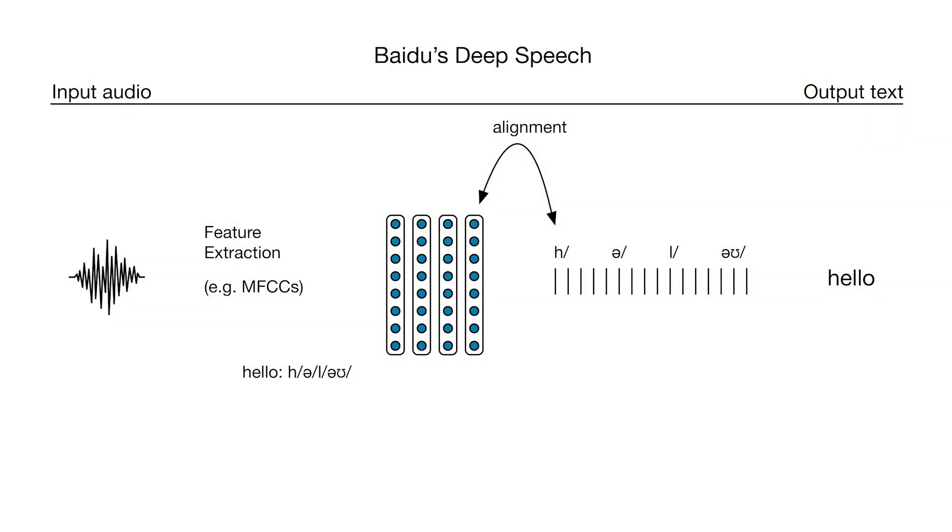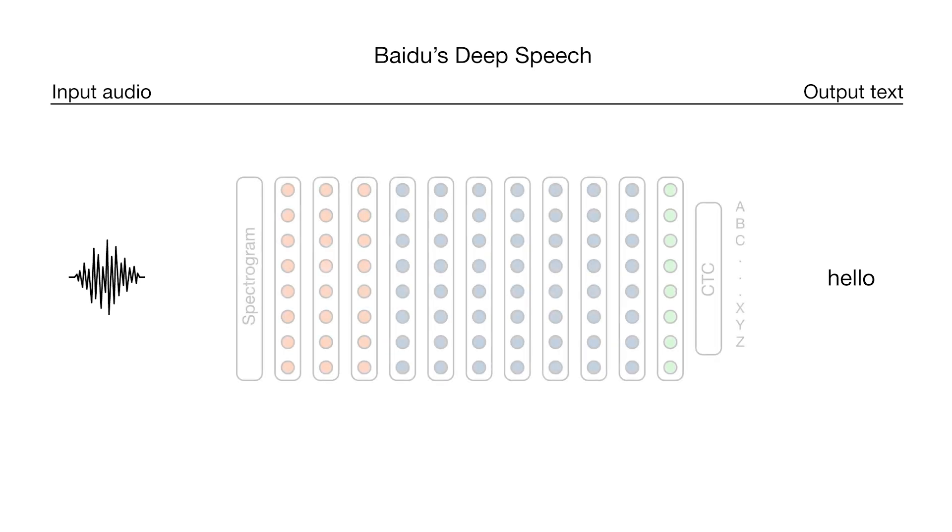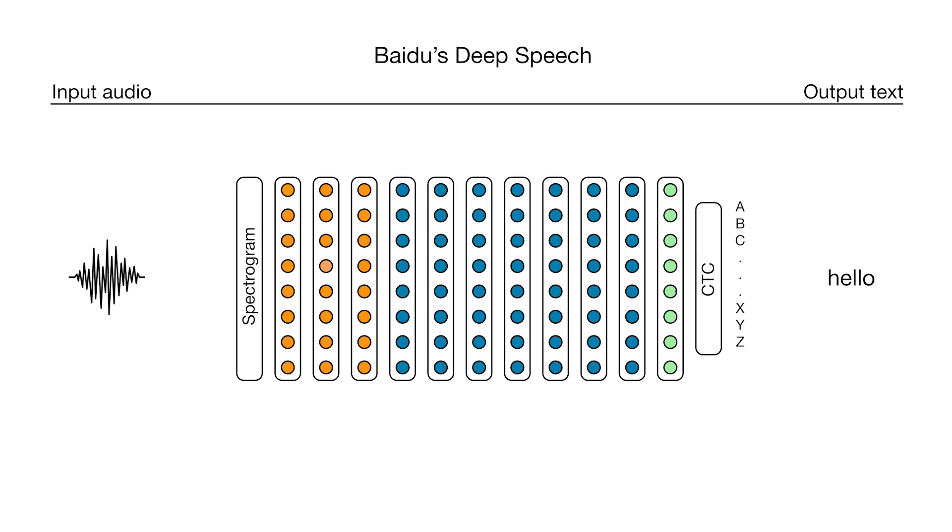The end-to-end approach we used in Deep Speech allowed us to achieve state-of-the-art results quickly without having to tweak all these components. Deep Speech doesn't use specialized features like MFCCs or a lexicon of phonemes. We train directly from the spectrogram of the input audio signal. The neural network does all the tweaking.